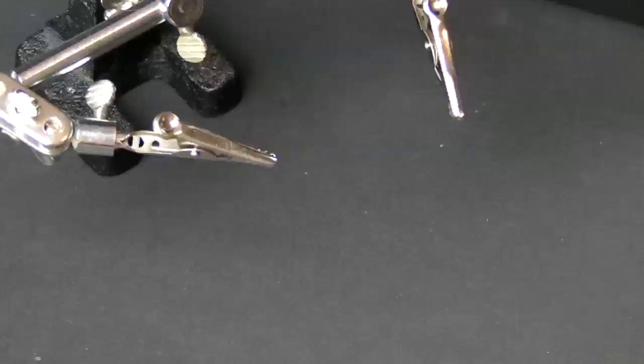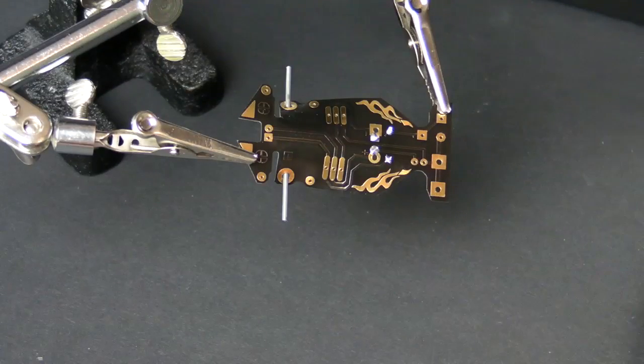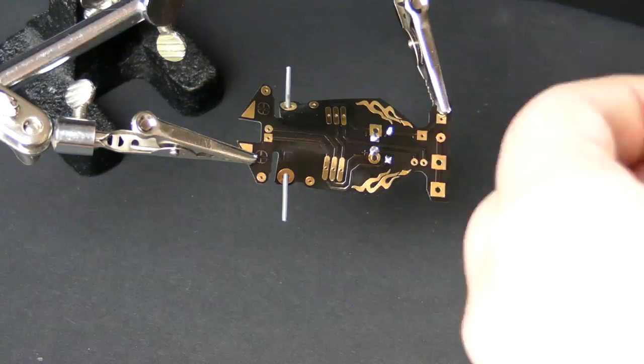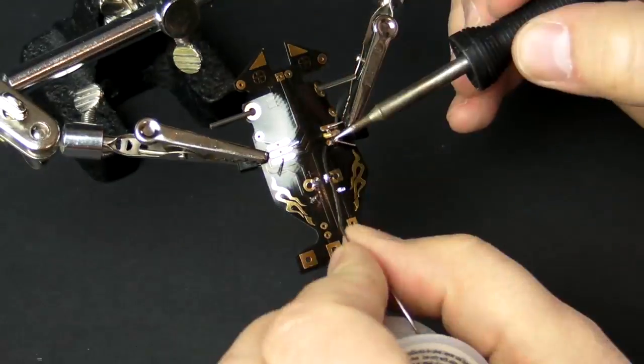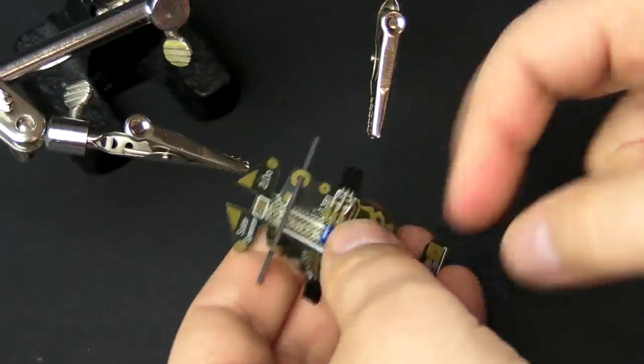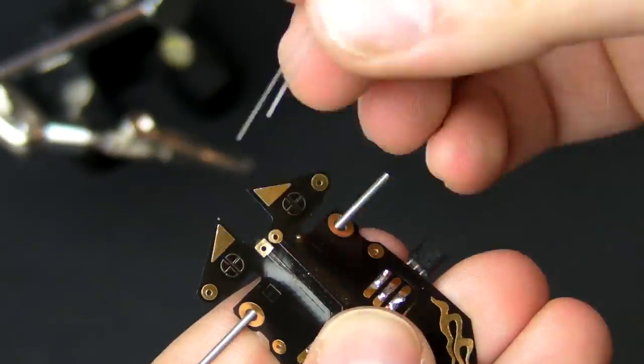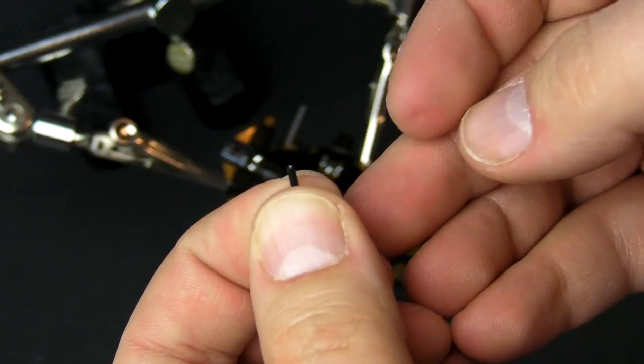Now it's time to install the transistor. Next, let's install the second capacitor. The next part is to mount the wheel.